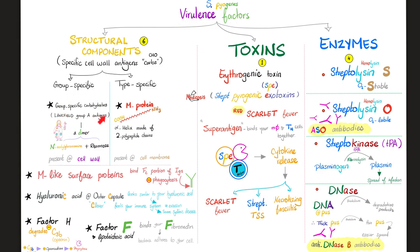Lancefield group A antigens are group-specific carbohydrates in the cell wall. M-protein is in the cell membrane. M-like surface proteins bind the Fc portion of your antibodies. When this happens, the antibody cannot bind the antigen and then bind to the macrophage so the macrophage can eat the bacteria — this inhibits phagocytosis. This is how the bacteria protects itself from your immune system.